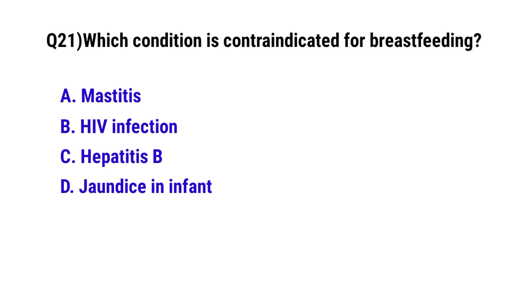Question No. 21: Which condition is contraindicated for breastfeeding? The correct option is B: HIV infection.